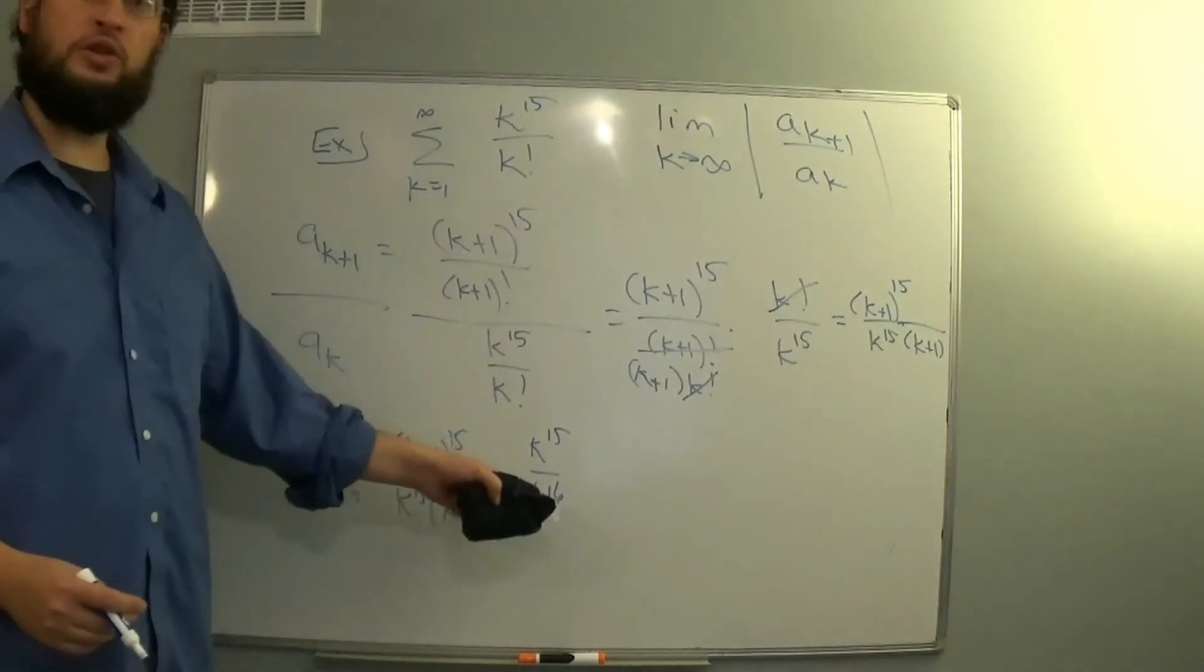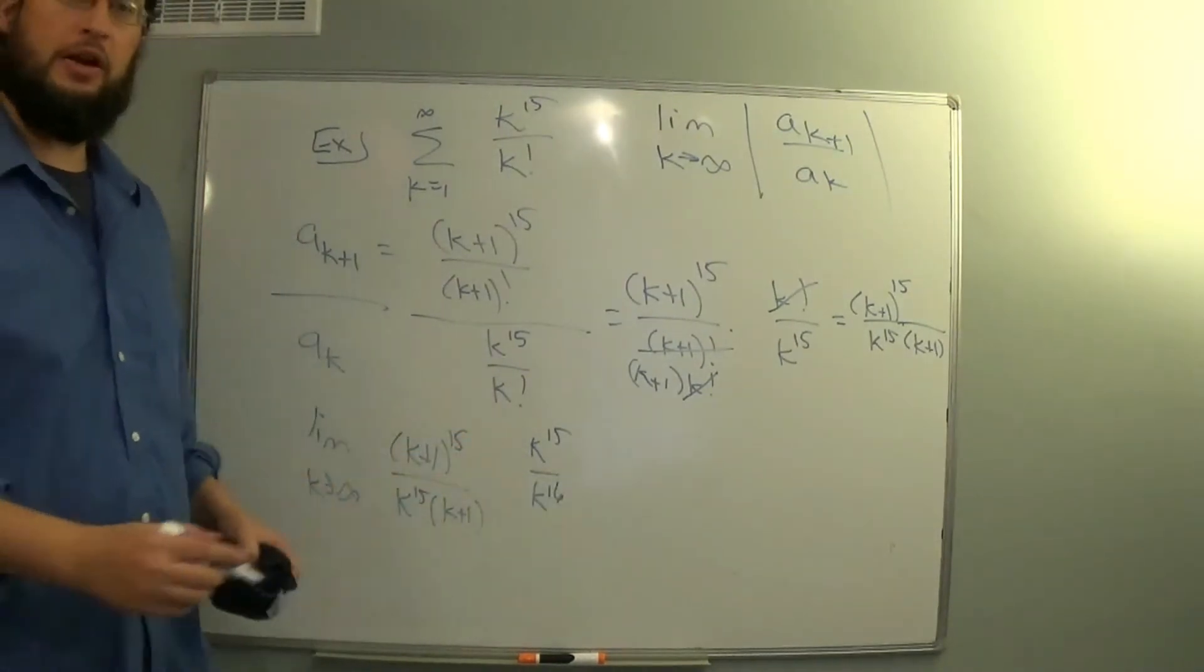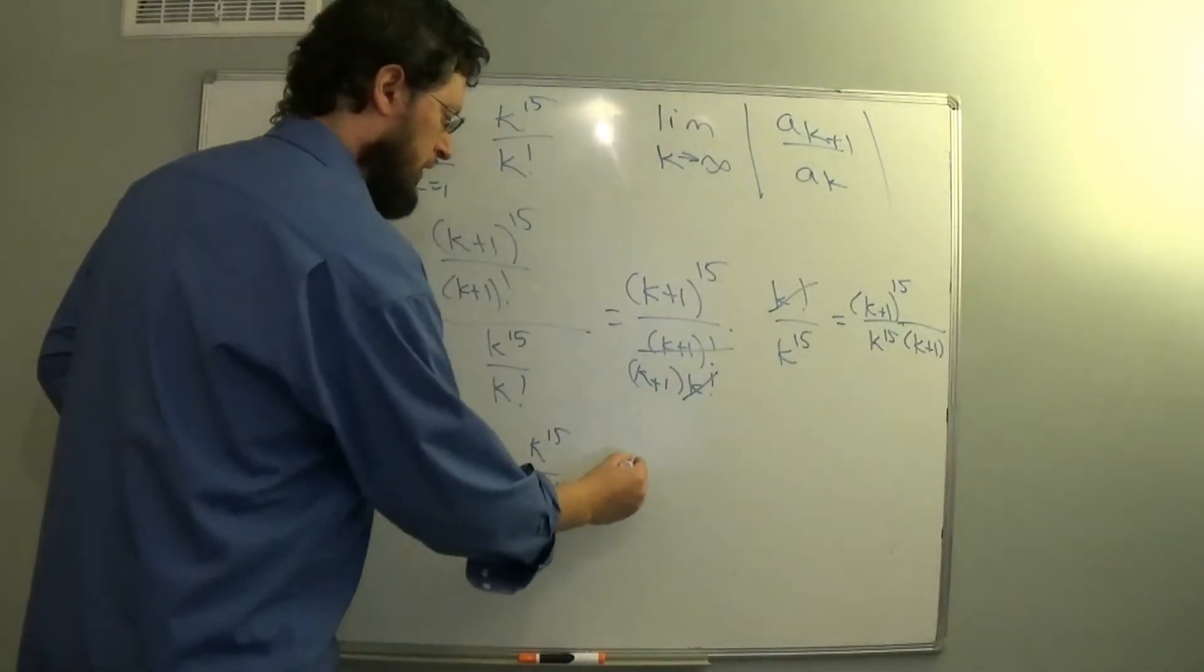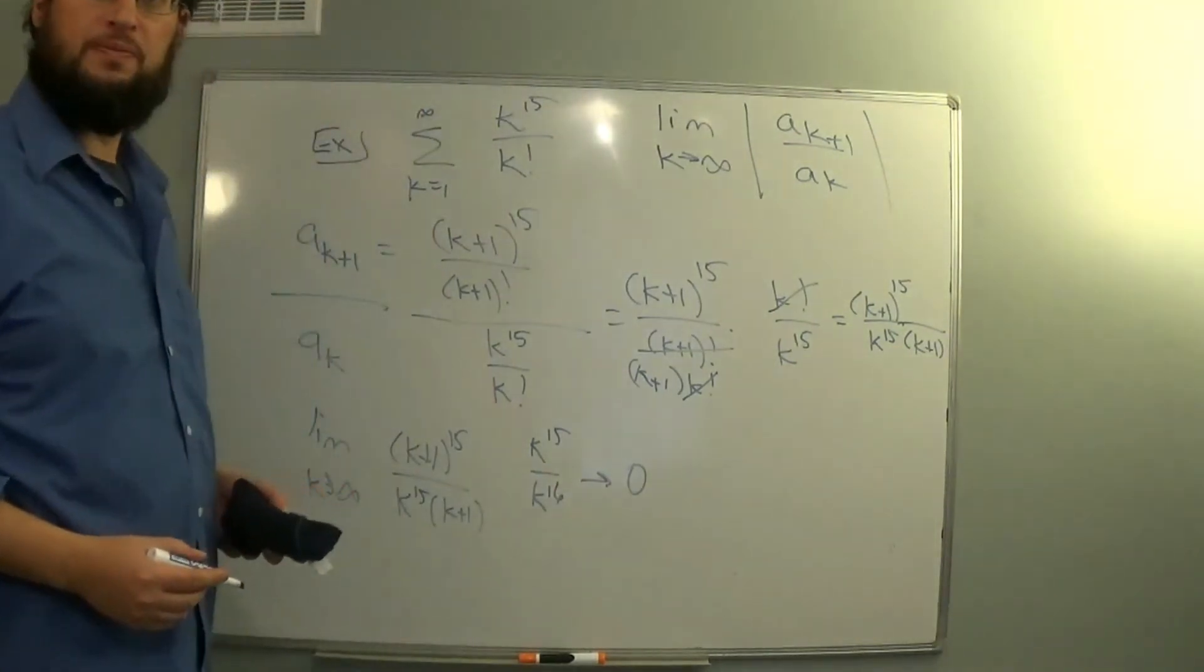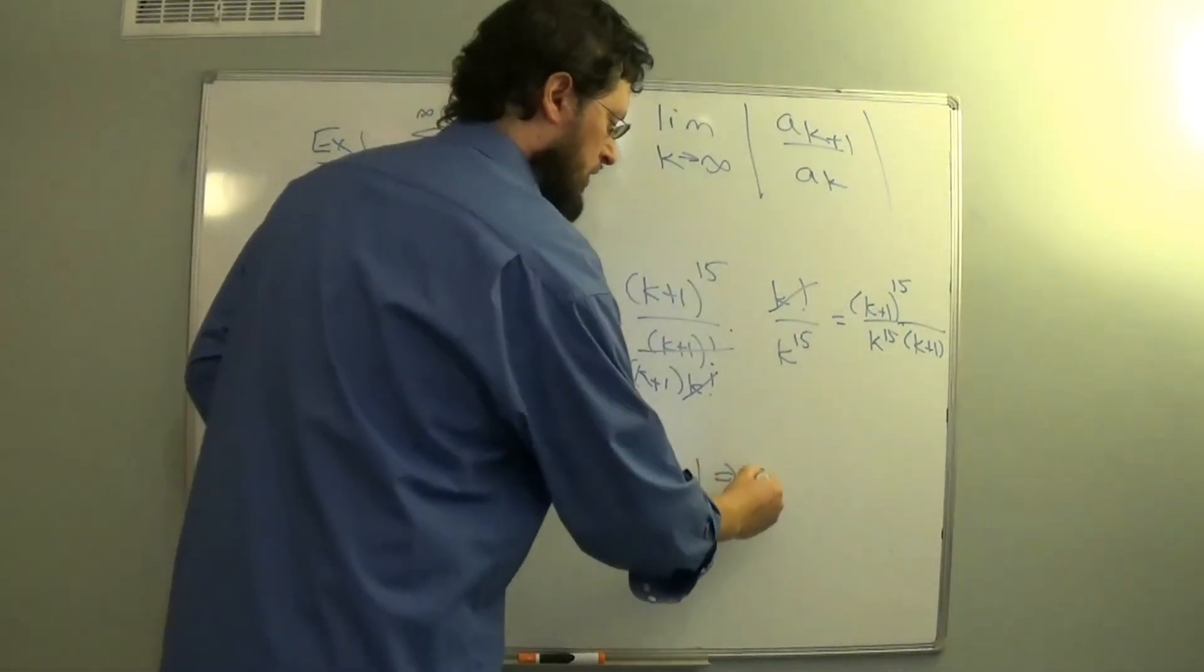So in the limit this goes to zero, because the denominator has a higher exponent. So this limit is zero, since that's less than 1, the series converges.